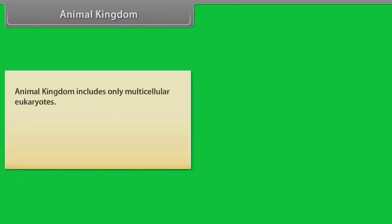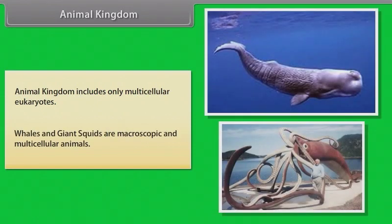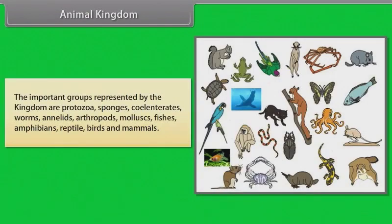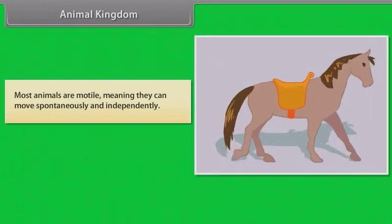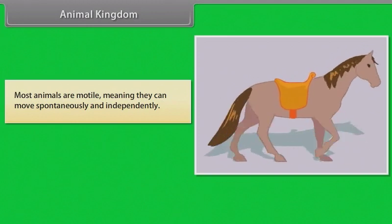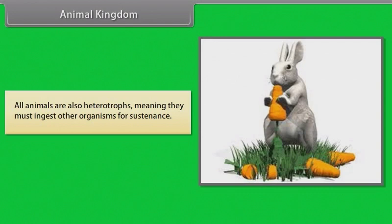The animal kingdom includes only multicellular eukaryotes. Whales and giant squids are macroscopic and multicellular animals. The important groups represented by the kingdom are protozoa, sponges, coelenterates, worms, annelids, arthropods, mollusks, fishes, amphibians, reptiles, birds and mammals. Most animals are motile, meaning they can move spontaneously and independently. All animals are heterotrophs, meaning they must ingest other organisms for sustenance.